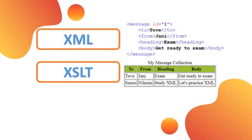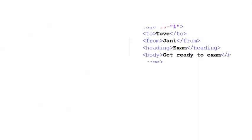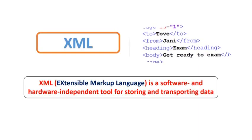Hello everybody. This video demonstrates how XML data is displayed on a web browser. XML, Extensible Markup Language, is a markup language that defines a set of rules for encoding documents in a format that is both human readable and machine readable.